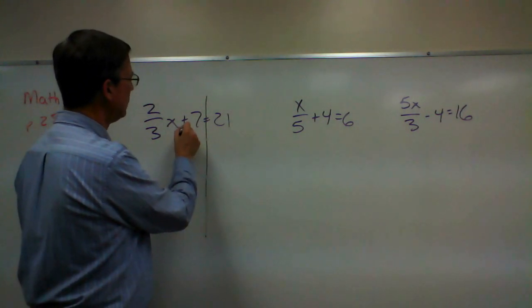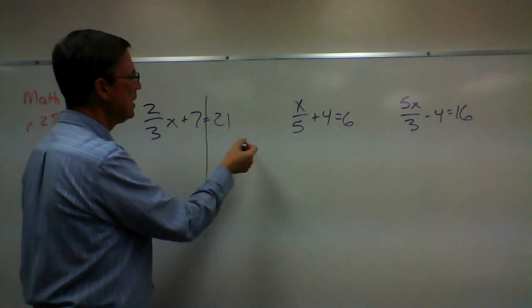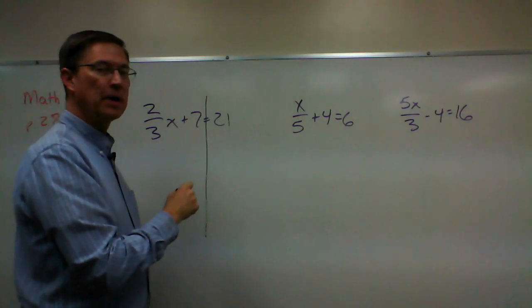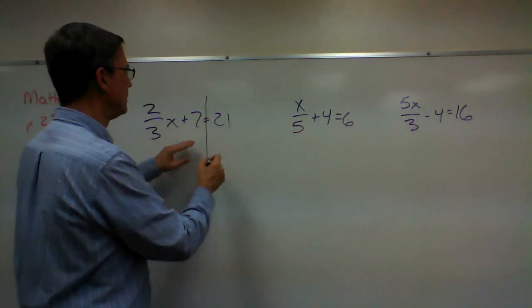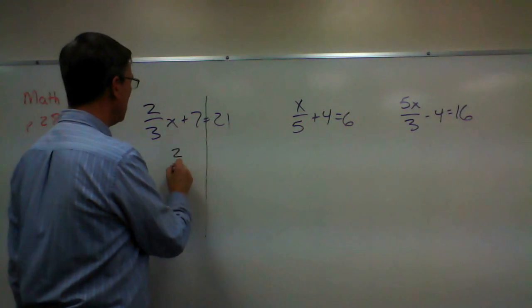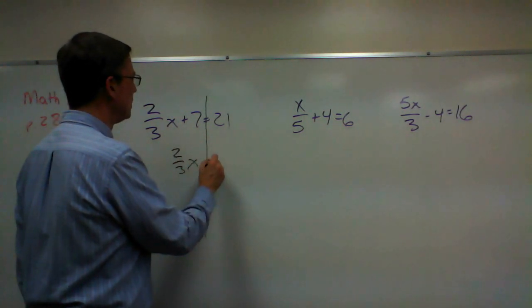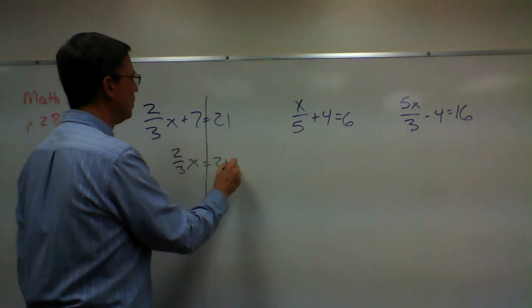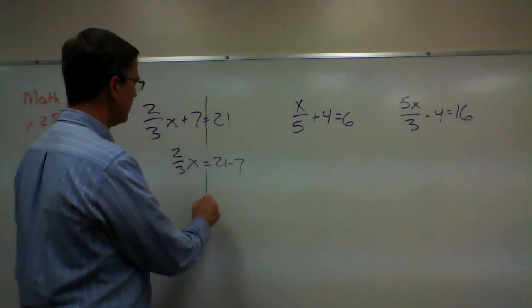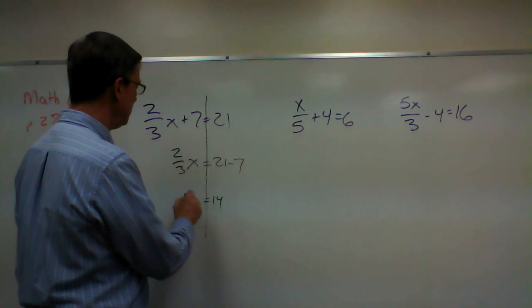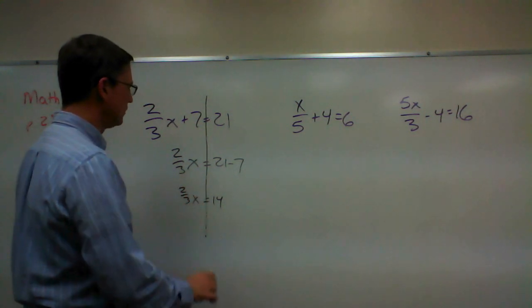The first thing I'm going to do is get rid of this 7, so I'm going to take the 7 to the other side and it becomes negative 7 because it was positive 7 here. So I'll end up with 2/3 X equals 21 minus 7, and of course that is 14. So I have 2/3 X equals 14.